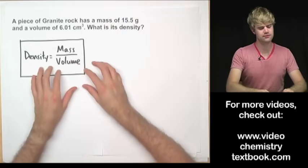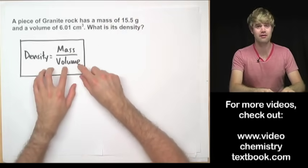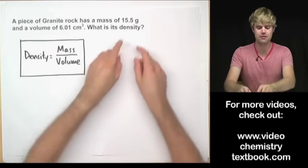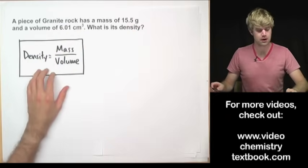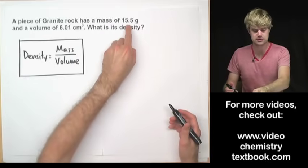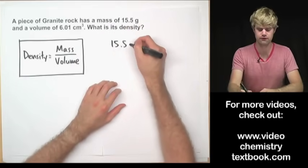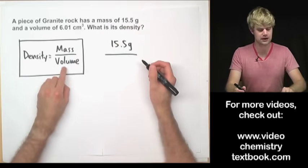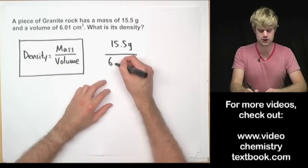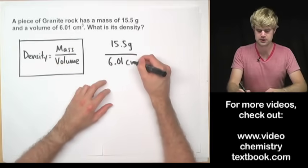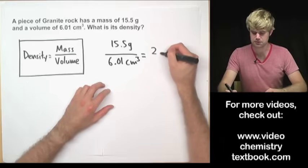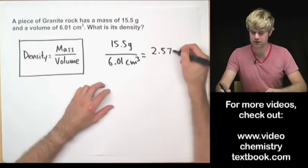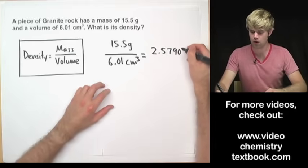So density is defined as mass divided by volume. In this problem I have a mass in grams and I have a volume in cubic centimeters. So all I got to do is take this mass 15.5 grams and divide it by the volume which is 6.01 centimeters cubed, and that gives me 2.57903.